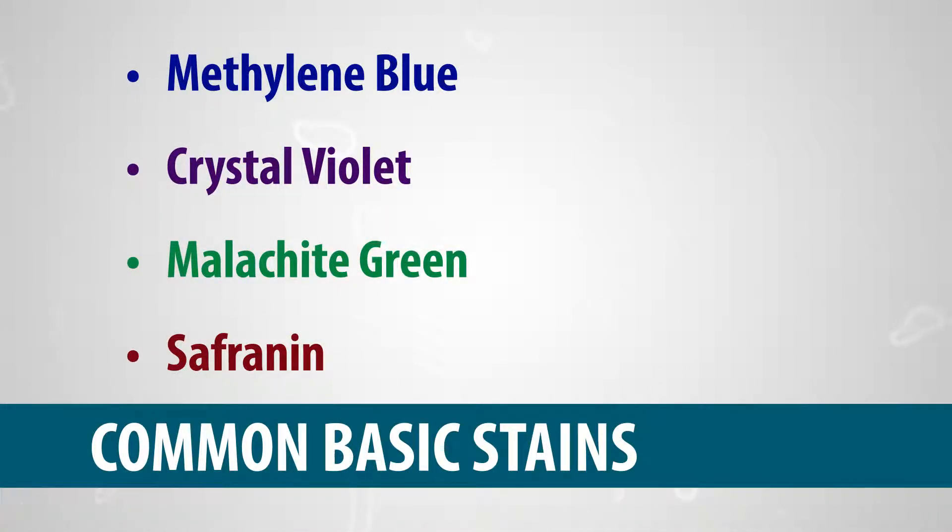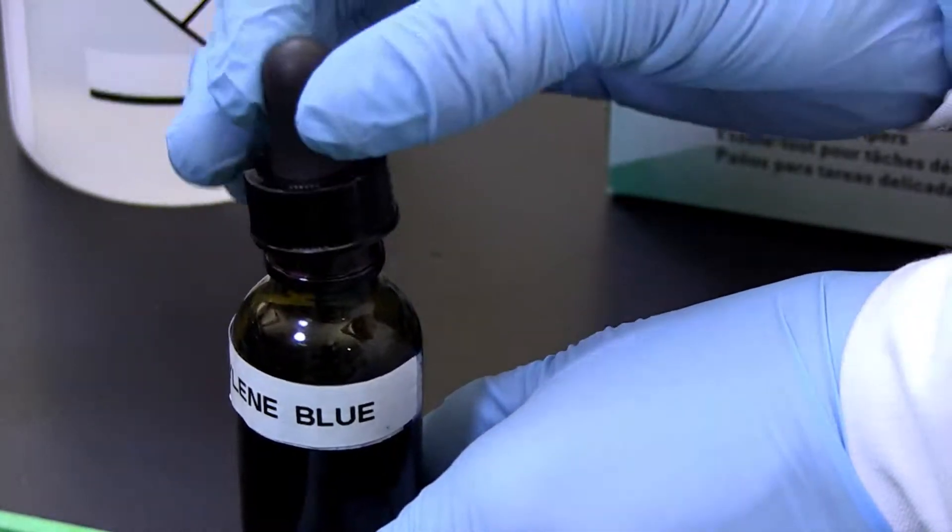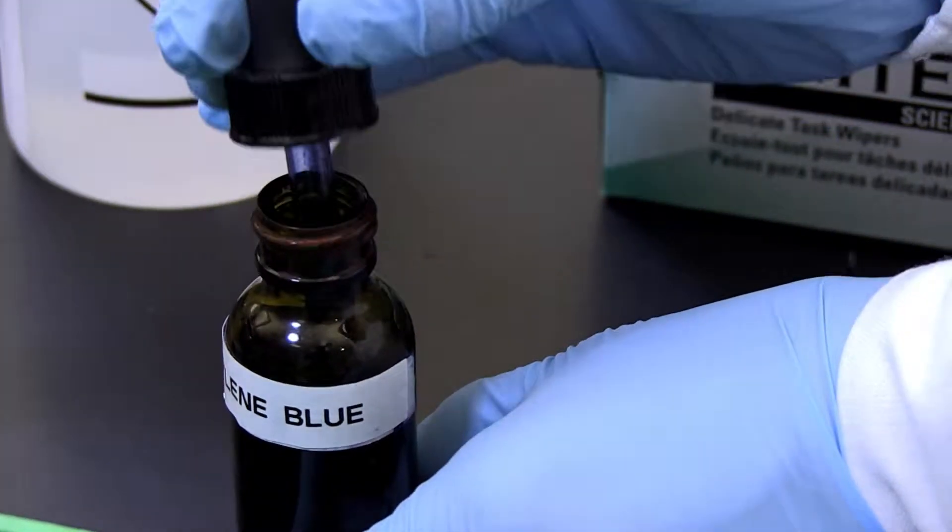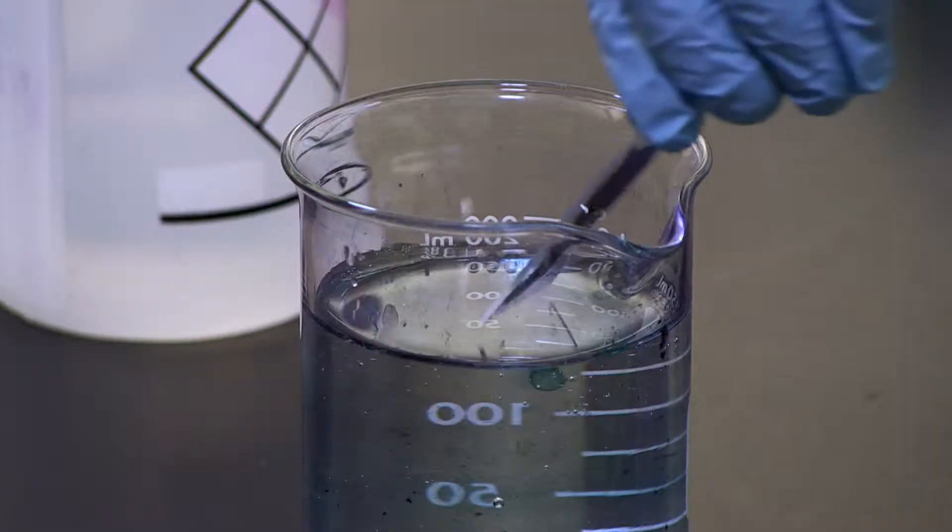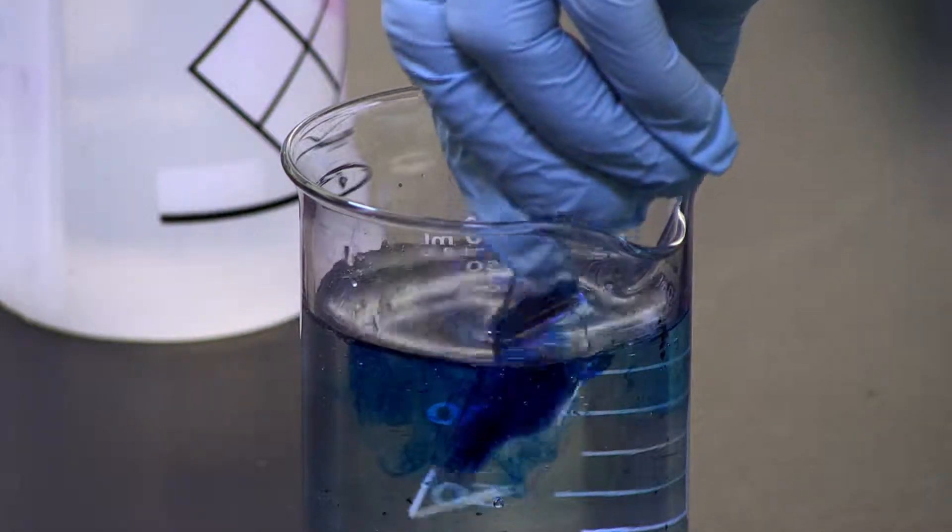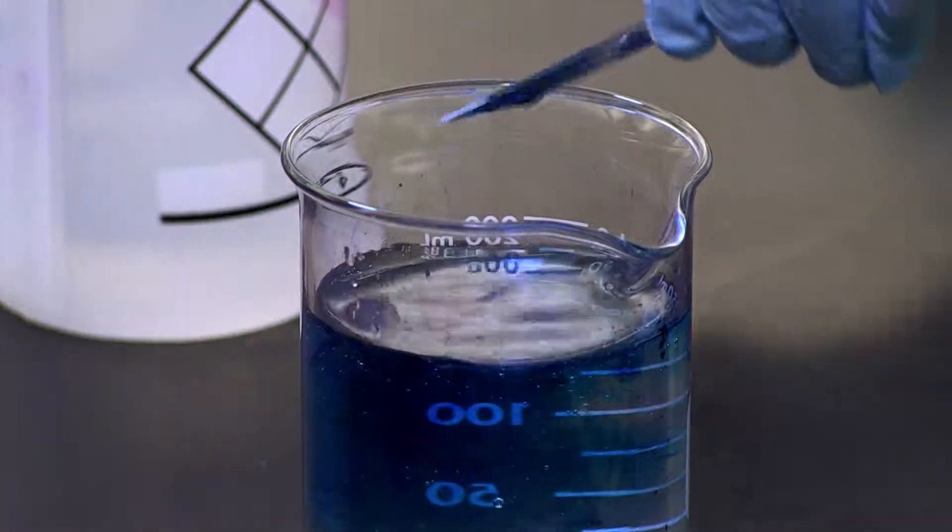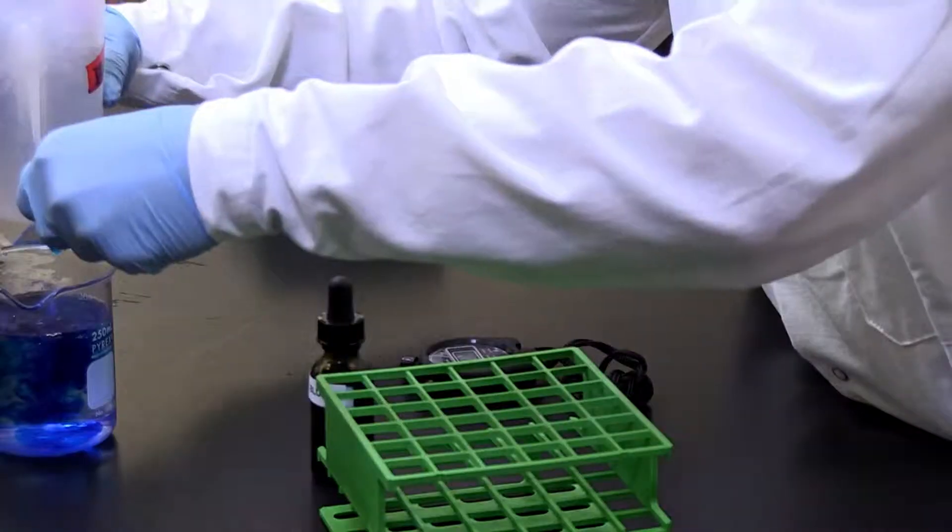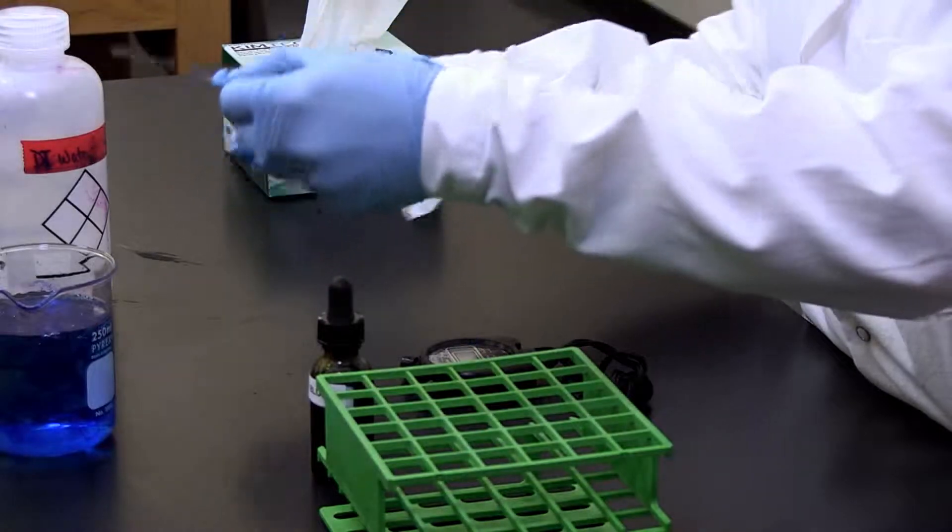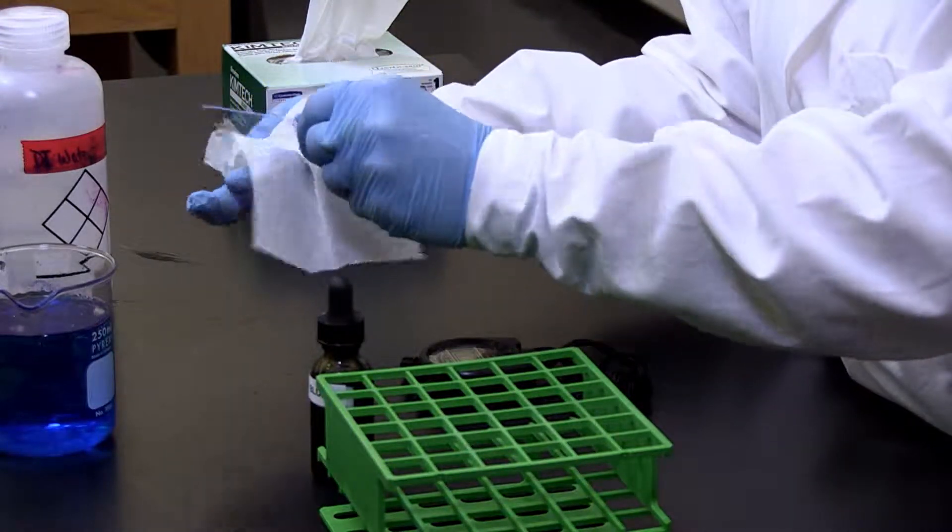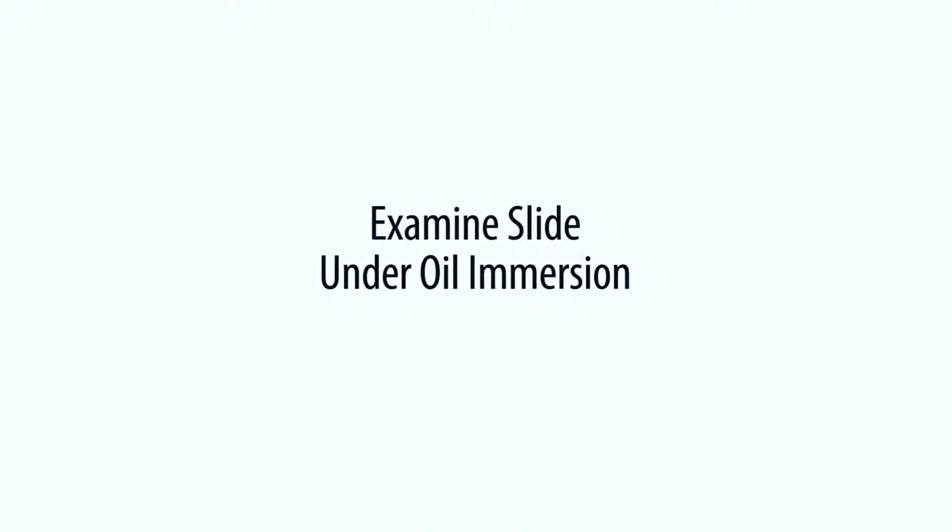To prepare a simple stain: One, cover the heat-fixed bacterial smear with methylene blue for 60 seconds. Two, gently rinse the smear with deionized water for 10 seconds. Three, blot the slide with bibulous paper to remove excess water. Four, examine the slide under oil immersion.